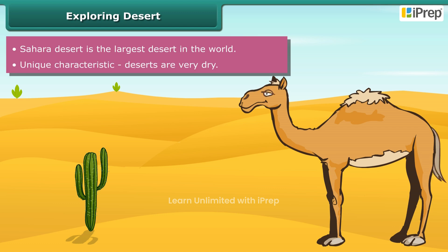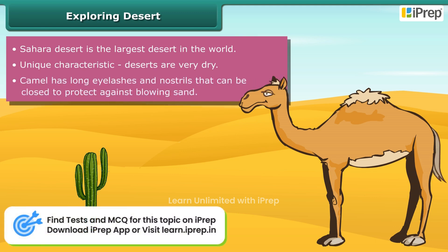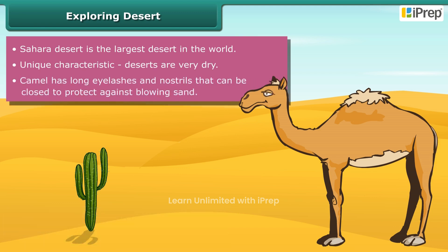Plants and animals living in deserts have modified features to survive in such extreme conditions. The camel has many adaptations that are specifically suited to its desert habitat. The camel has long eyelashes and nostrils that close to protect against blowing sand.